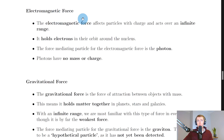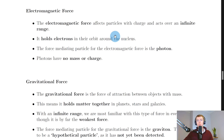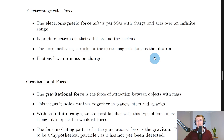Next we have the electromagnetic force. It affects particles with charge and acts over an infinite range. It holds electrons in their orbit around the nucleus — because the nucleus is positively charged overall (protons are positive, neutrons are neutral), the negatively charged electrons are attracted towards it, and the electromagnetic force holds them in their orbits. The force mediating particle for the electromagnetic force is the photon. A good way to remember this is that photons are particles of light and light is a form of electromagnetic radiation.